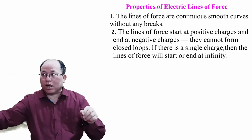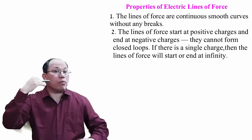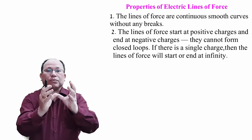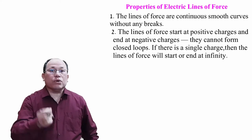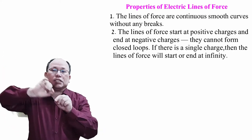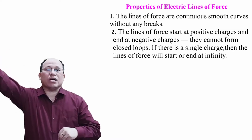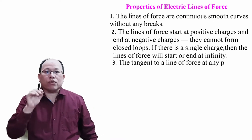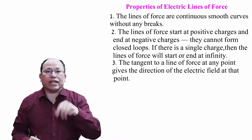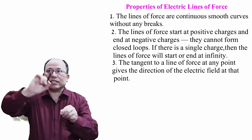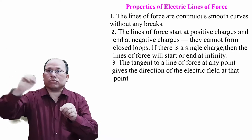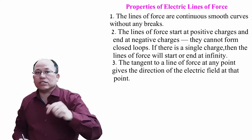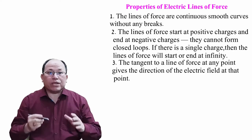If there is a single charge — either plus q or minus q — the field lines originate or terminate on that charge. Third property: the tangent to a line of force at any point gives the direction of the electric field at that point. At every point of the curve you can draw a tangent, and that direction represents the direction of the electric field.